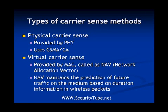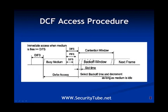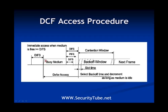Physical carrier sense is simple CSMA/CA. This picture shows the access procedure in the DCF mechanism. Every node has to wait for DIFS amount of time after finding the medium to be free and before starting transmission. A node finds the media free, waits for DIFS time, and after completion of DIFS time it starts transmission.